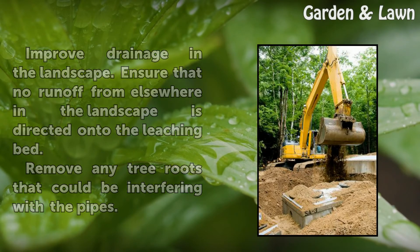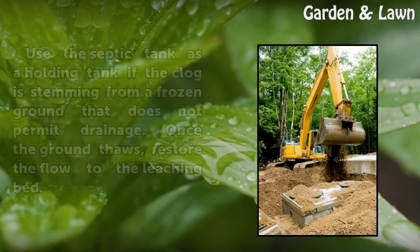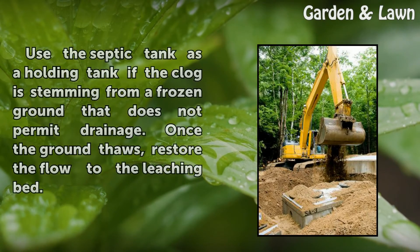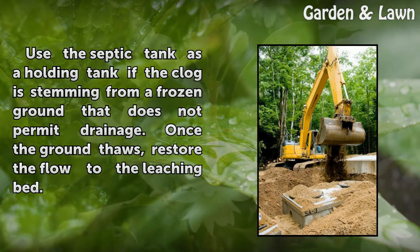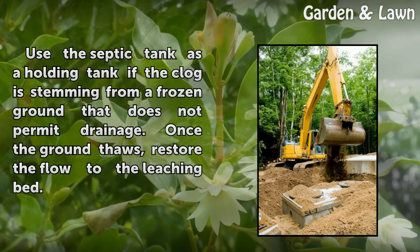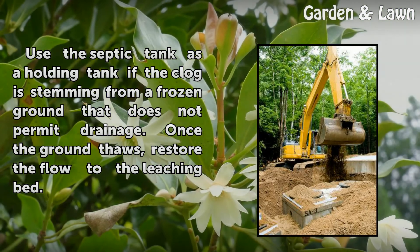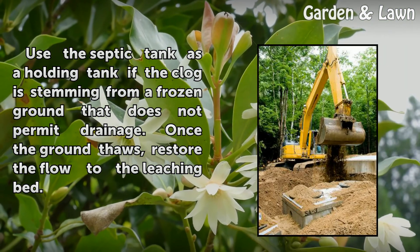Remove any tree roots that could be interfering with the pipes. Use the septic tank as a holding tank if the clog is stemming from frozen ground that does not permit drainage. Once the ground thaws, restore the flow to the leaching bed.